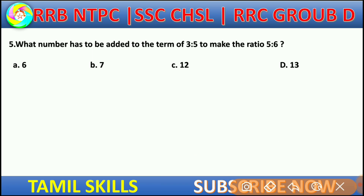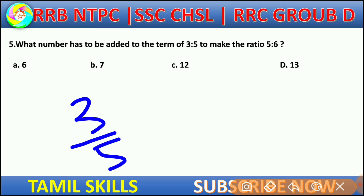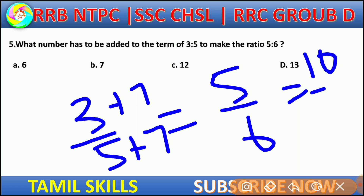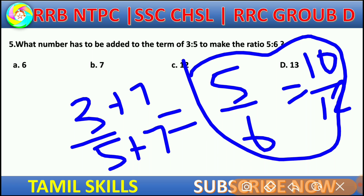Let's verify: checking the ratio gives 5 by 6 equals 5 by 6. Then 7 is to 7 gives 10 by 11 or 10 by 12. The answer is verified from the question.